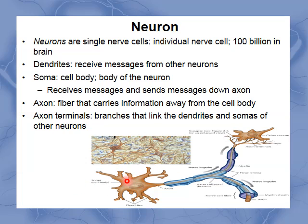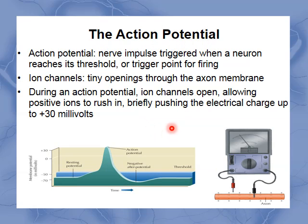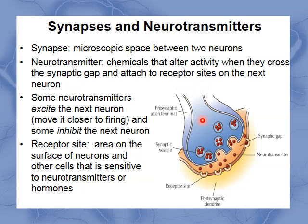Within the neuron we have basically an electrical current — we call this the action potential. Within the soma, an electrical current begins to develop, and when that current gets high enough, it shoots electricity down the axon. At the end of the axon are the synapses, and as that electrical current comes down, it stimulates the creation of neurotransmitters. Neurotransmitters are the chemical part of the brain — they're what we're talking about when we say somebody has a chemical imbalance. Within the neuron we use electricity; between the neurons we have chemicals.